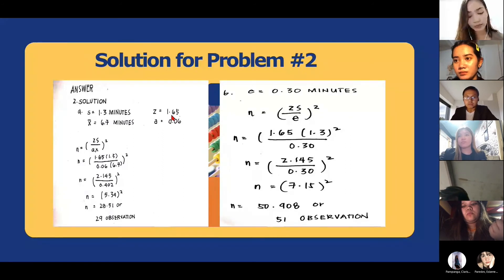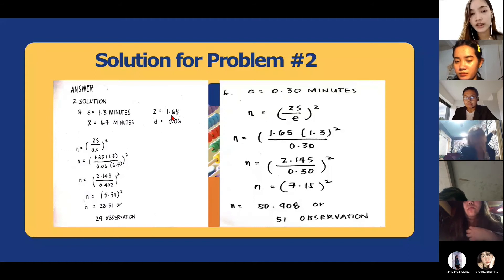Then if we take the square root of 5.34, it will be 28.51. At dahil observation po yung tinatanong natin, kailangan natin siyang i-round up. So ang kalalabasan na yan ay 29 observations.